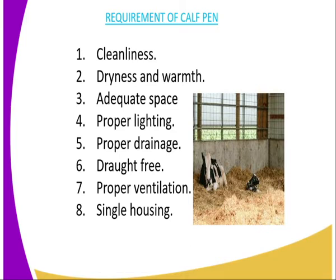Then we have proper drainage. The calf pen should have proper drainage to prevent stagnation of water, because stagnation of water results in the accumulation of disease-causing microorganisms, exposing the calf to various infections. The pen should also be draft-free — the side allowing wind to come in should be blocked permanently, as cold drafts act as agents of transfer for disease-causing microorganisms, making the calf highly susceptible to infection.